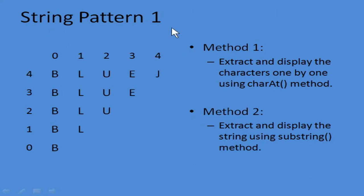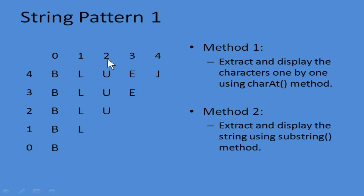Now we are going to take the first pattern. You have 5 rows and 5 columns. Since it is a string, you will always start with the index value from 0 to however many characters there are. Here you can see 'BlueJ' — it has 5 characters, so the index value will be from 0 to 4.